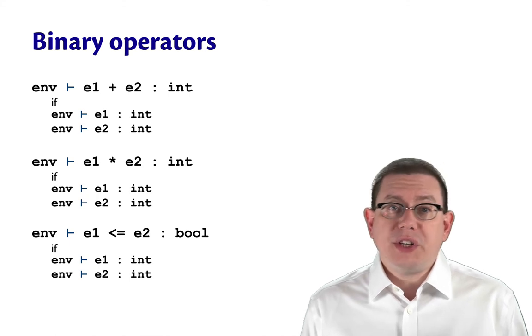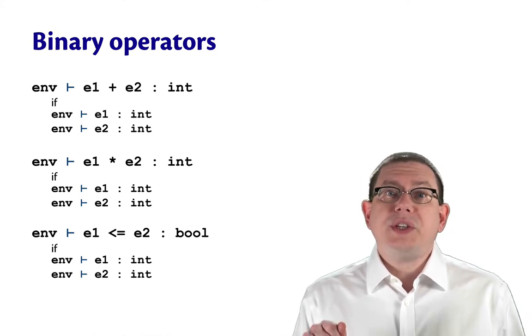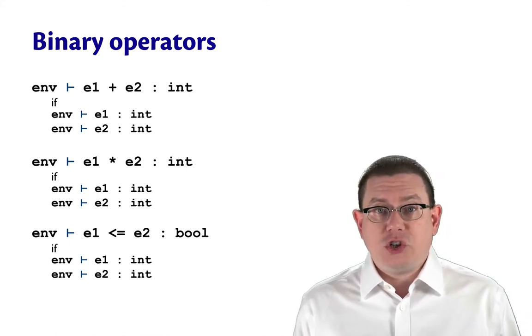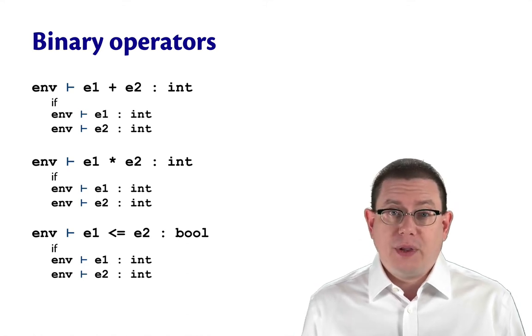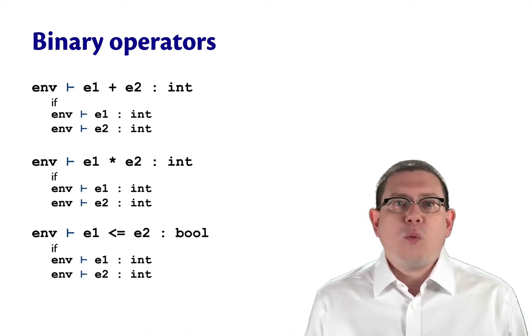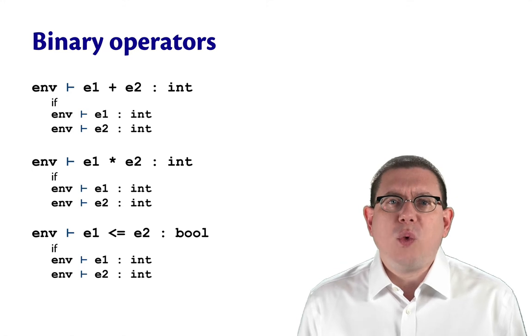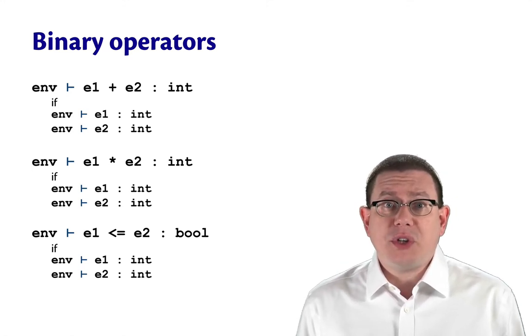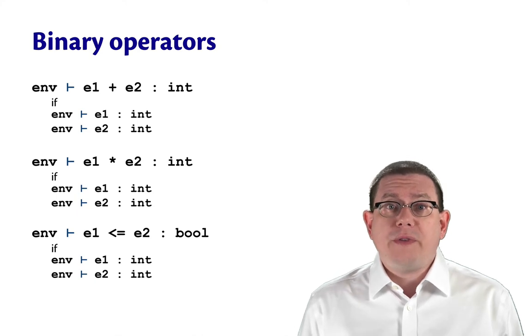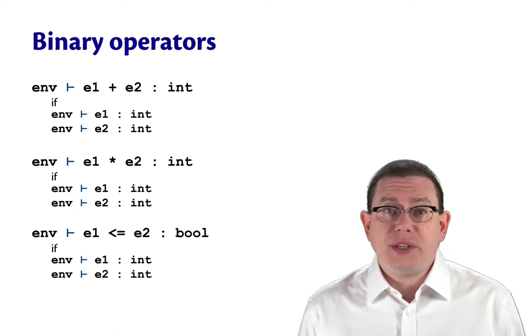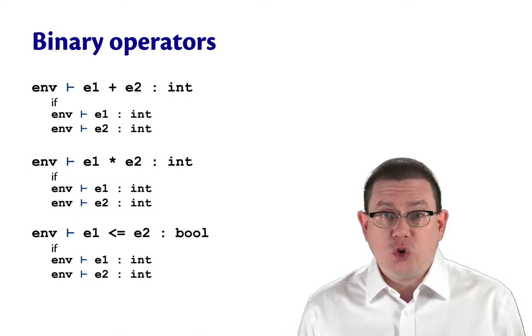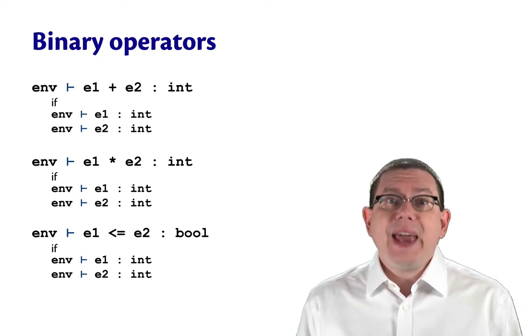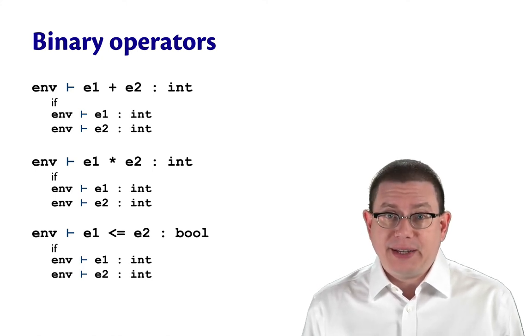Now notice that we recurse into each of those sub-expressions using the same static environment each time. It's not changing. And the reason for that is whatever evaluation occurs of e1 on the left-hand side of plus, it's not going to change the variables that are in scope when we go to evaluate the right-hand side of that plus, the sub-expression e2. So variables are contained within scopes that way syntactically.